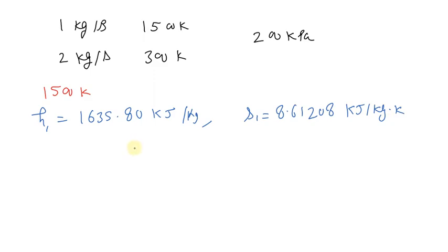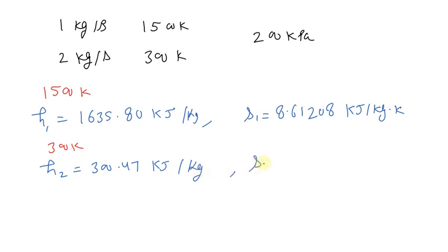Similarly, from the same table, properties corresponding to 300 K temperature can be written as: H2 is equals to 300.47 kJ per kg, and S2 is equals to 6.86928 kJ per kg Kelvin.